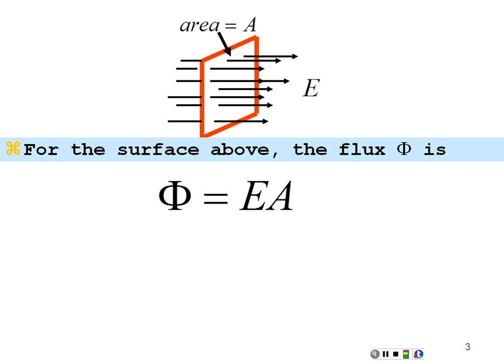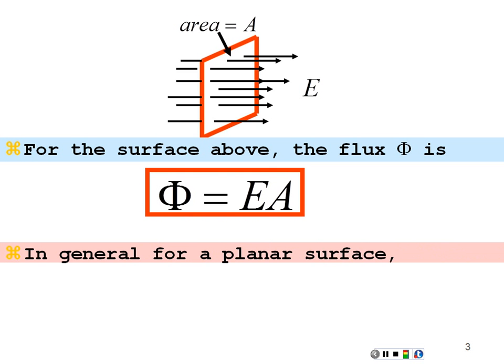Same thing with A. If I were to increase my area, I would encompass more of these field lines and hence have more flux. So if I increase either the field or the area, I'm going to get more of this flow of the field — more flux lines going through that area. In general, if I had a planar surface, the flux is equal to the dot product between the E field and the area vector for that surface. This allows me to account for the orientation of the area.